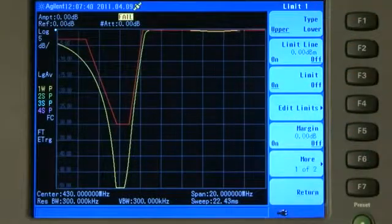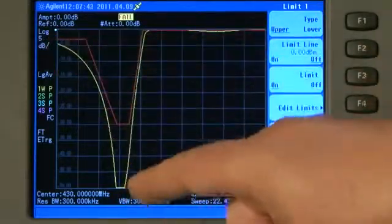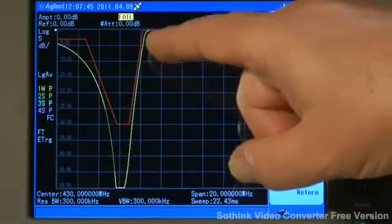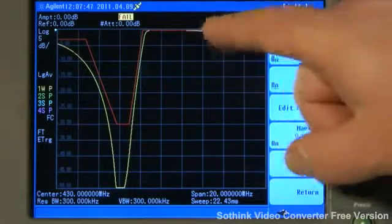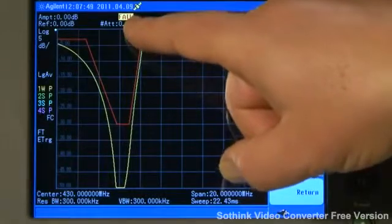And where the measurement of the device passes and meets the specification, the trace remains yellow. But where it doesn't pass, the trace goes red and we get a fail indication on the top of the screen.